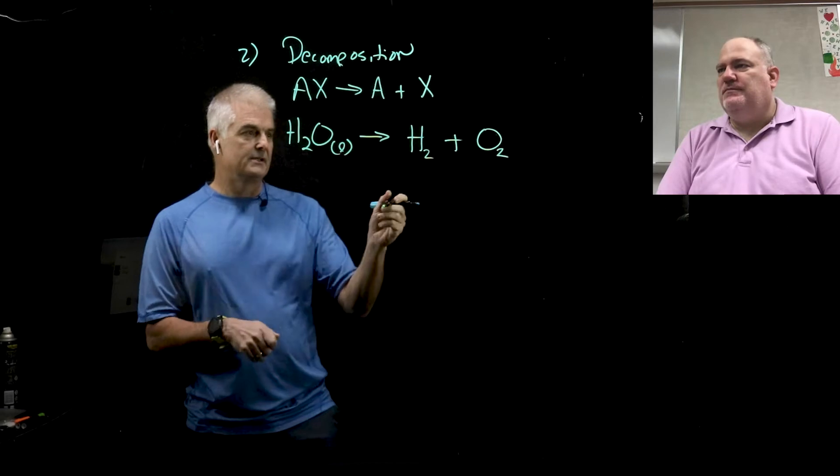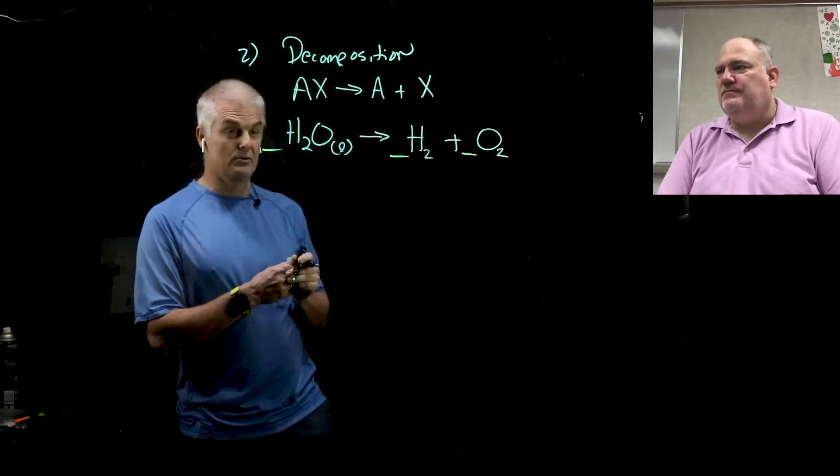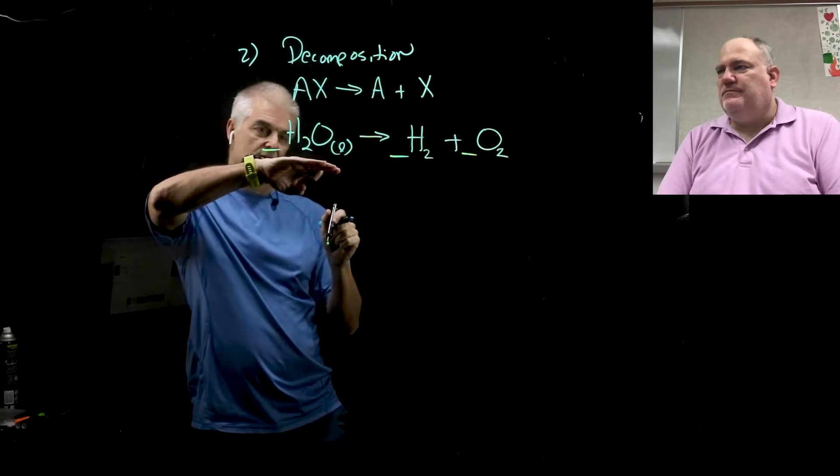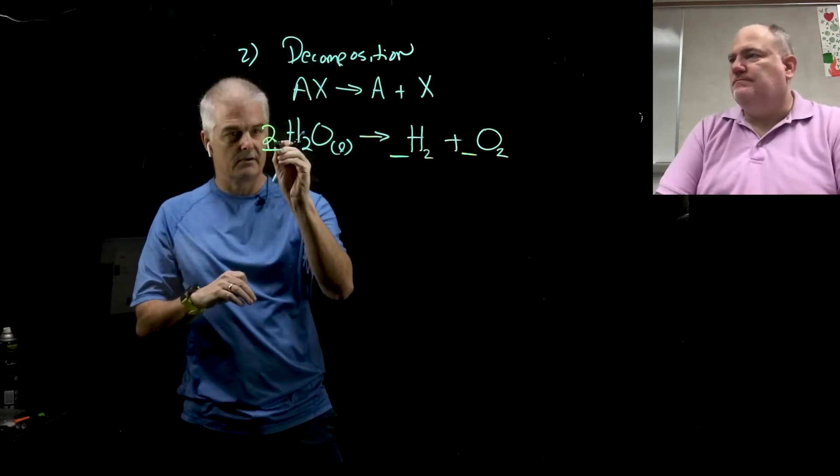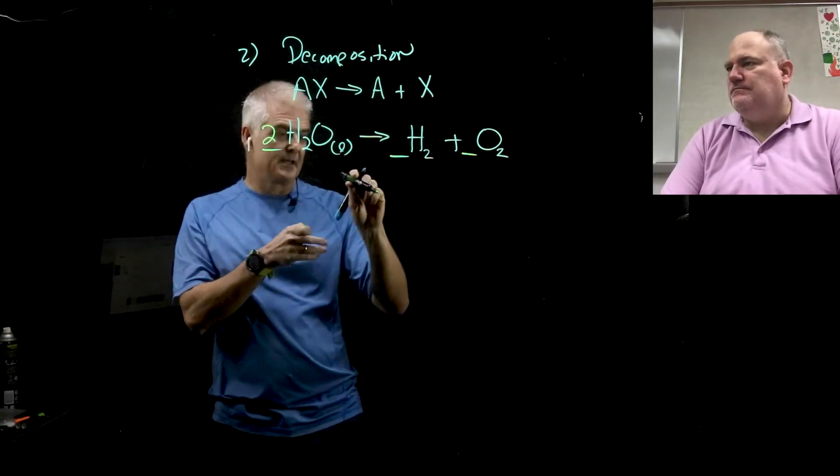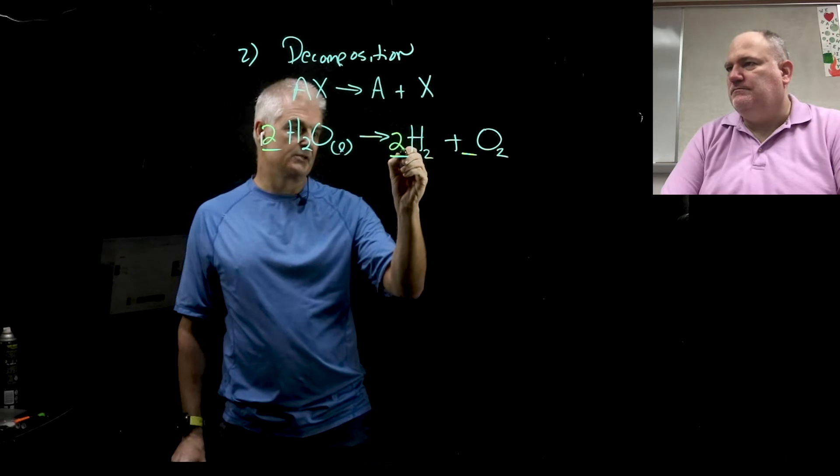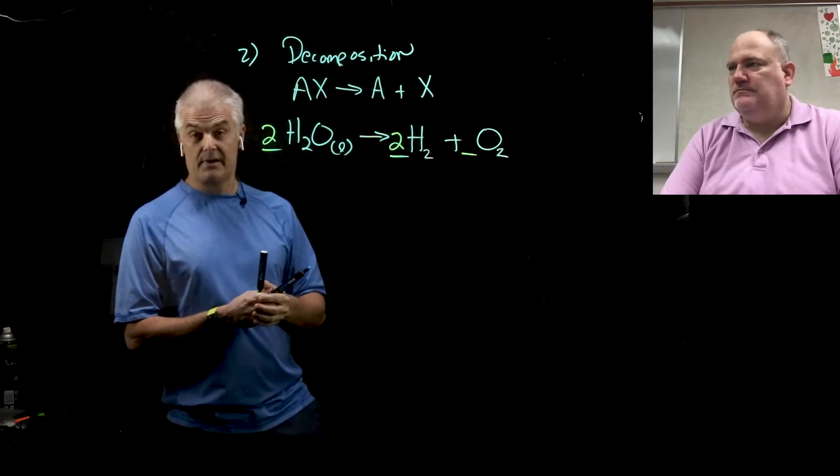But again, we have a problem. When we try to balance this equation, it doesn't look like it's right. But we can only make it right by changing the coefficients. So I have a problem with oxygen. On this side, I only have one O. On this side, I have two O's. To fix that, I have to put a two here. But that creates a problem with my H's. And now I have four H's. But that is simply easily fixed by putting a two there. So tell you what, let's take a look at an example of a decomposition reaction.